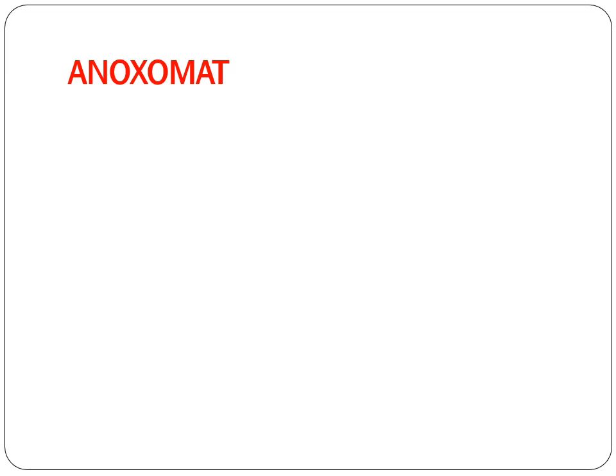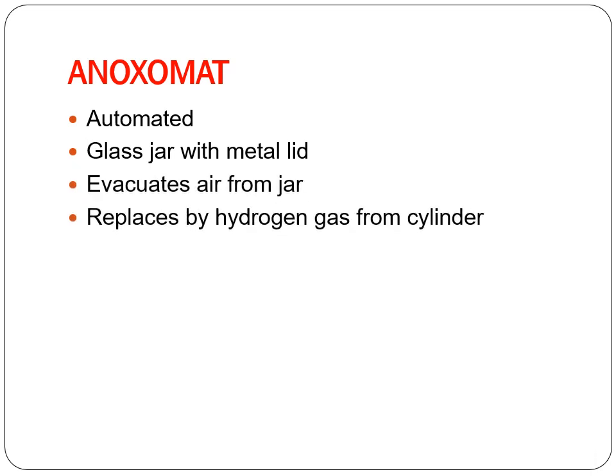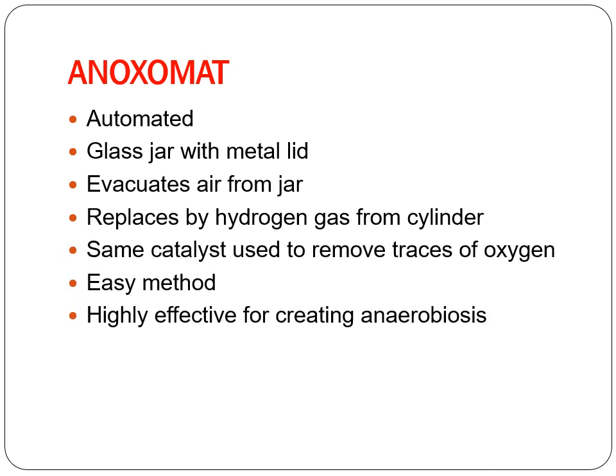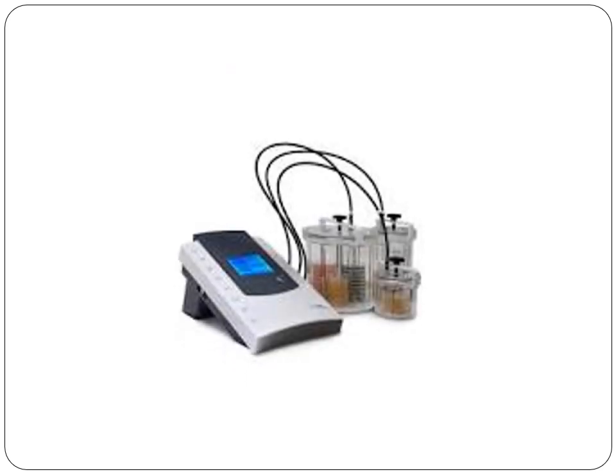The Anoxomat is an automated version of the McIntosh method. It is a glass jar with a metal lid — air is evacuated from the jar and replaced by hydrogen gas from a cylinder. The same catalyst — aluminium pellets coated with palladium — is used to remove residual oxygen. It is an easy and highly effective method for creating anaerobiosis, and the process runs automatically.